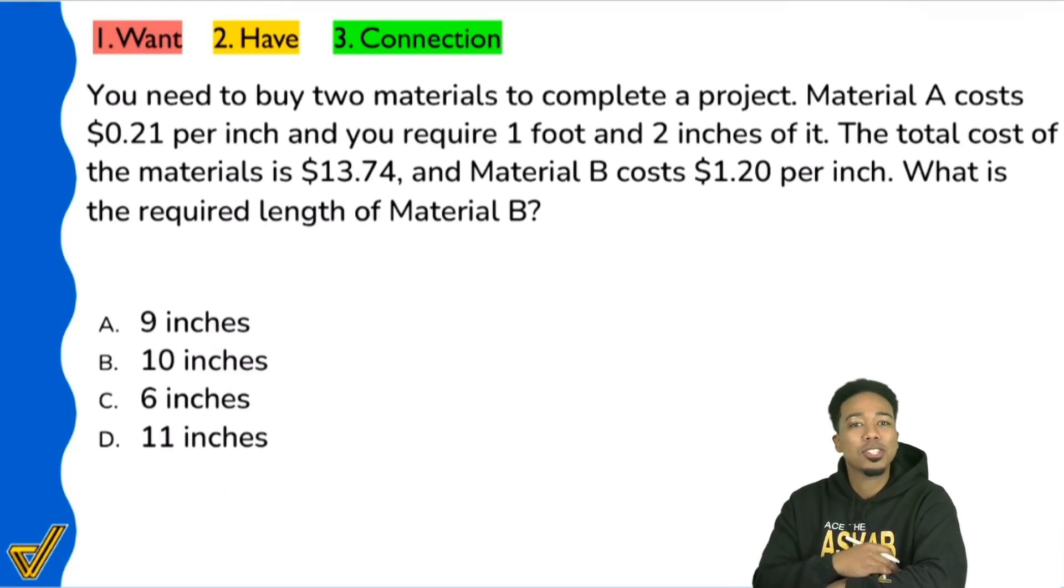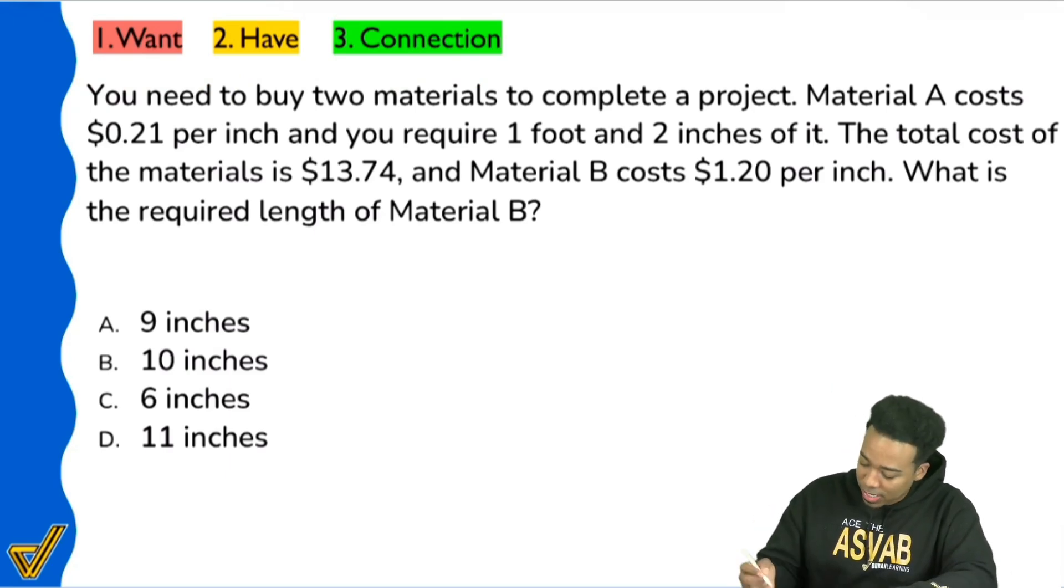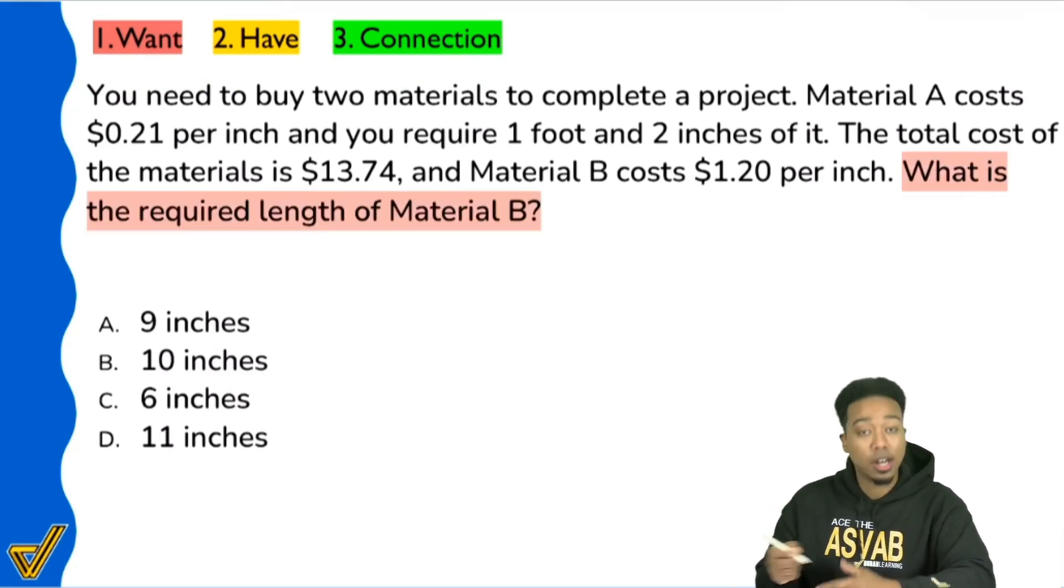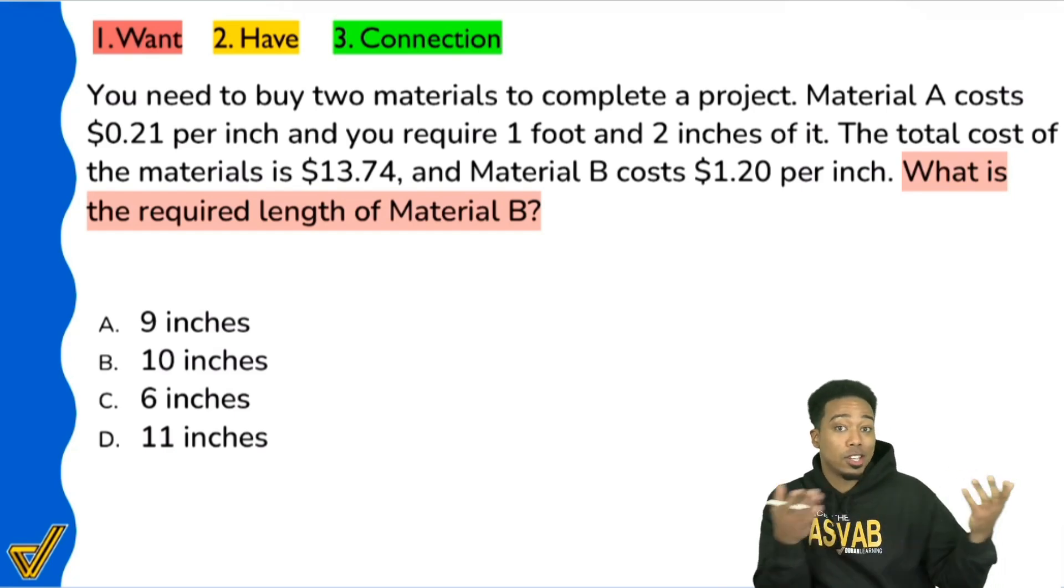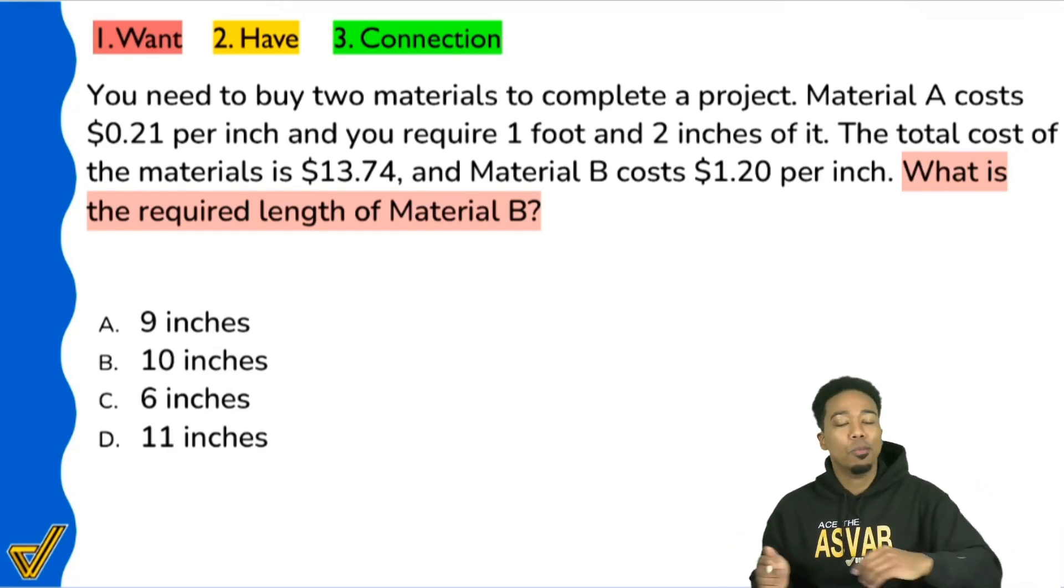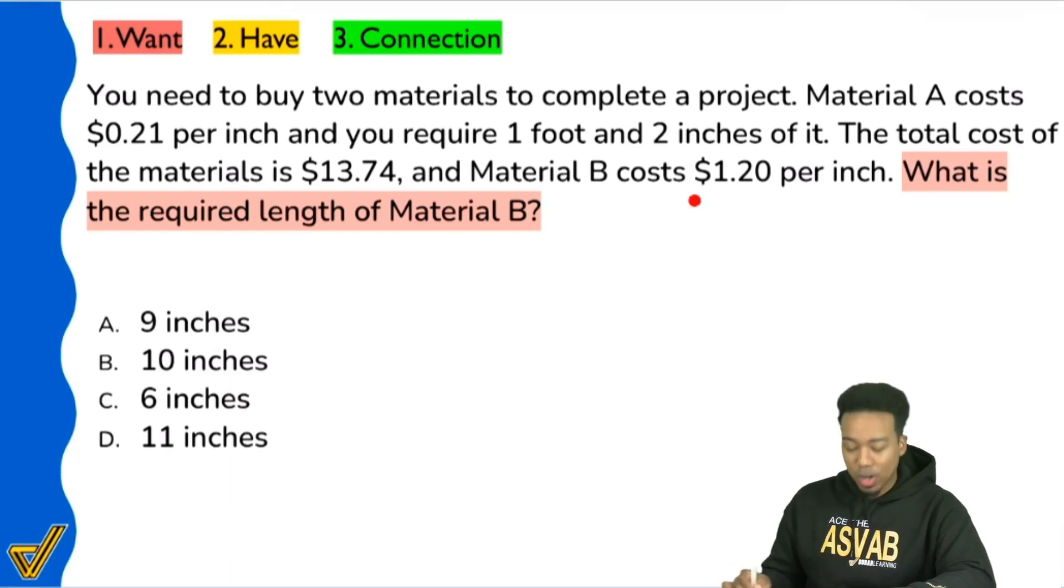I'll give you a chance to try this question out before I go ahead and start solving. One, three, two, and one. All right, let's go ahead and start solving here. So first things first, we have our three-step strategy. First thing you always want to do is read the question. You want to understand what the goal of the problem is. When you know what the goal is, that gives you a great opportunity to know what information is related to it. So our question here reads, what is the required length of material B?